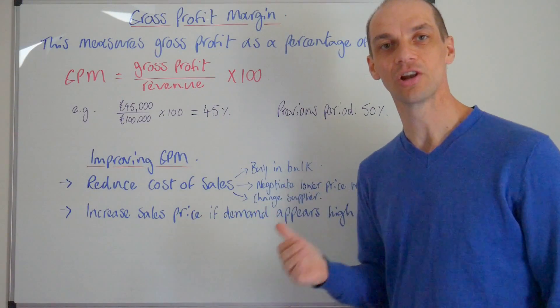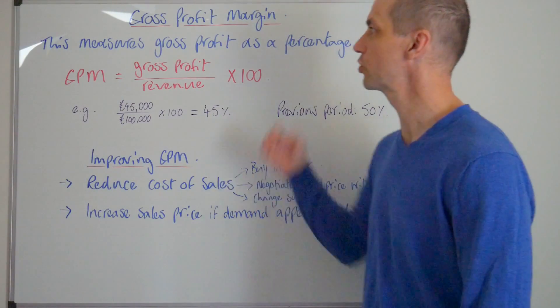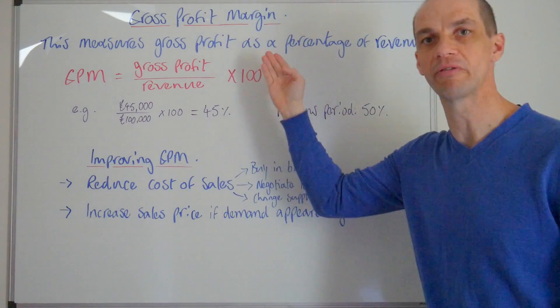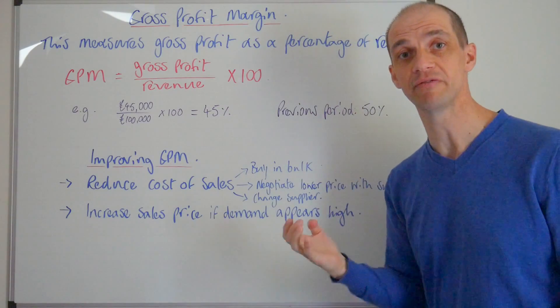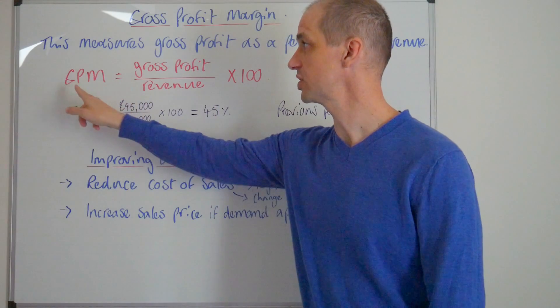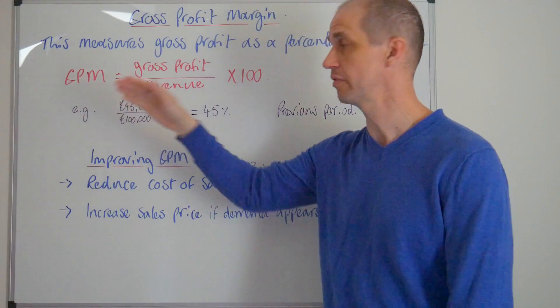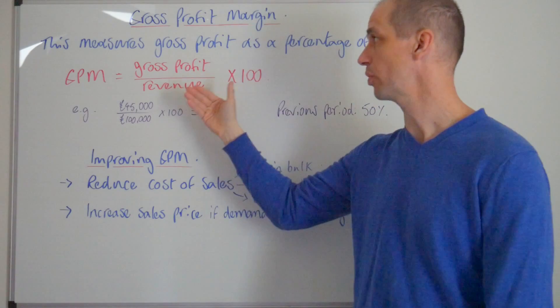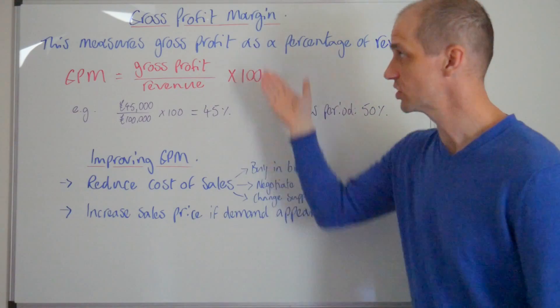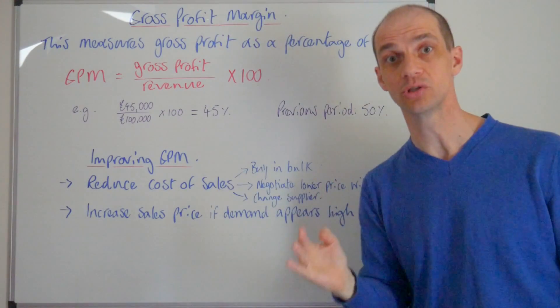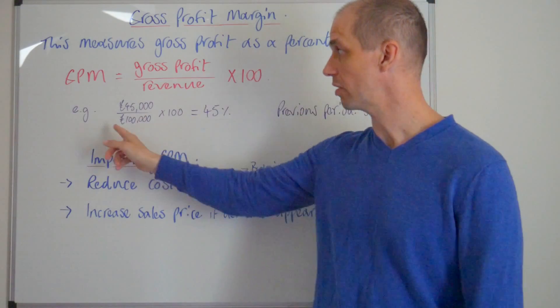Hi guys, let's now take a look at the gross profit margin. This measures gross profit as a percentage of revenue overall. It's simply calculated via gross profit margin equals your gross profit divided by your revenue times 100. It's a nice straightforward calculation to actually use and as you can see I've written out an example here.